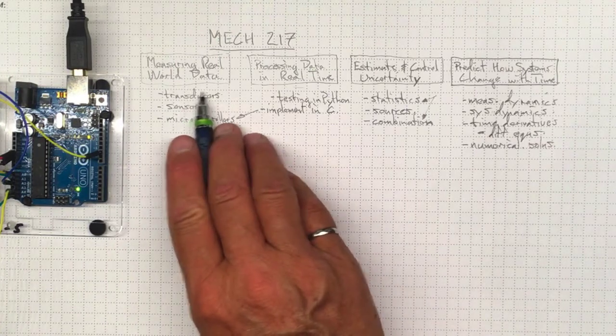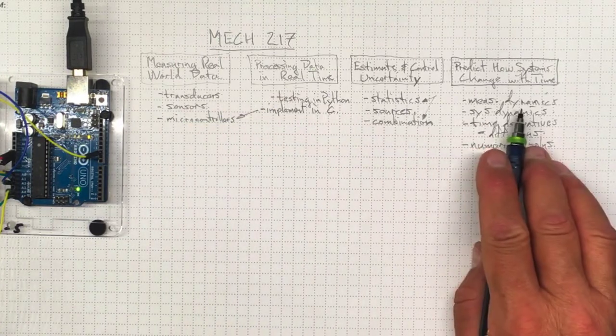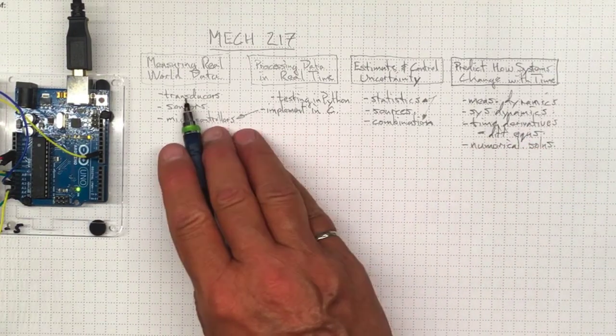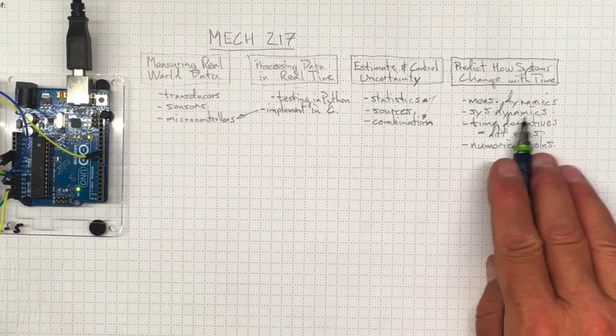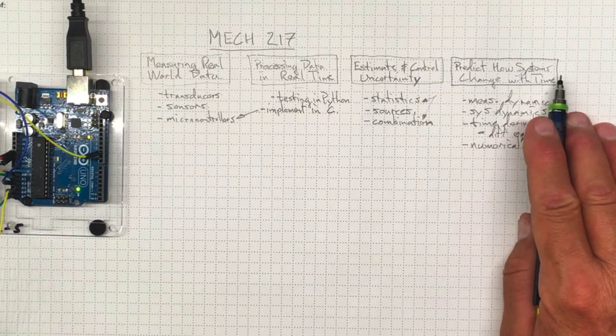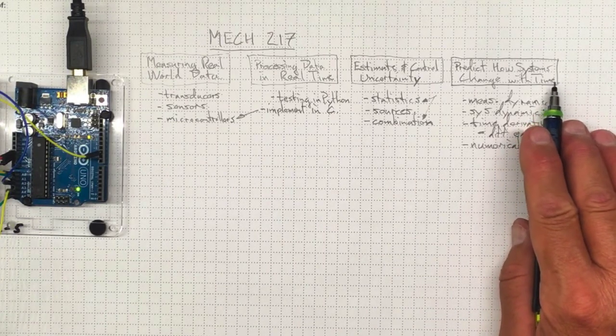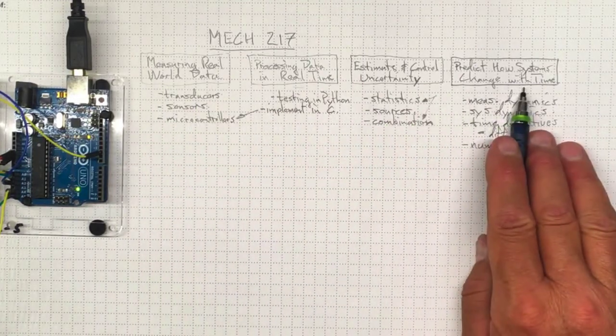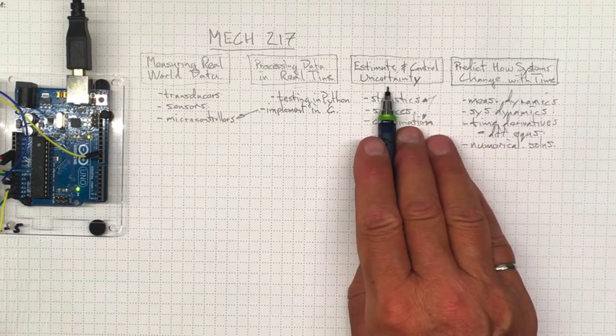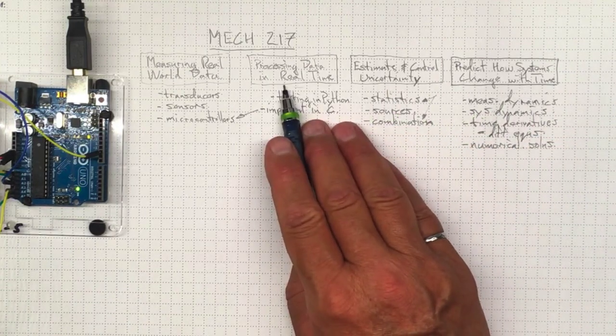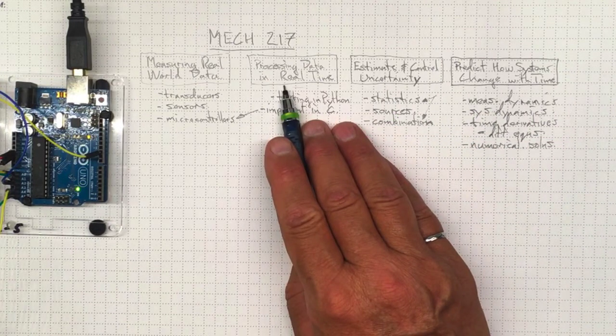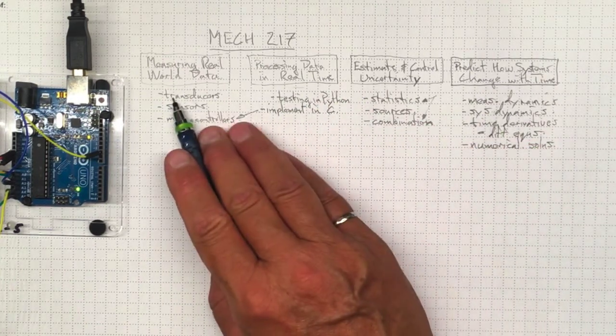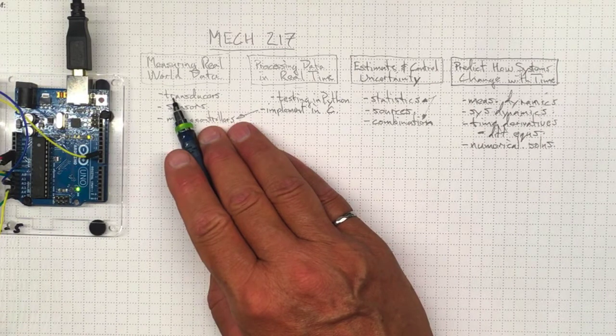So these are the four pillars that we're going to be working on in parallel all the way through MEC 217. And everything that we're doing, you should be able to see how it fits in under one of these. And we'll pull it together towards the end to look at some larger product systems and how to understand our measurements. We need to predict how our systems are changing with time subject to uncertainty, having processed our data in real time so that we can actually make those predictions and figure out what's going on in our real world.